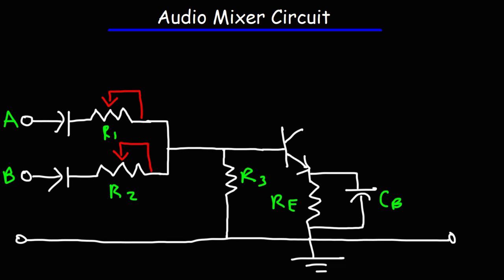R2 and R3 form a voltage divider. The same is true for R1 and R3. This allows us to control the input voltage that's applied to the base of the transistor. We don't want the input voltage to be too high because it could lead to distortion. If you do get distortion in the circuit, you can adjust R1 and R2.